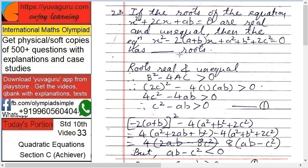Next, if the roots of the equation x² + 2cx + ab = 0 are real and unequal, then the equation x² - 2(a+b)x + a² + b² + 2c² = 0 has...